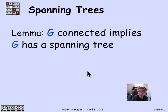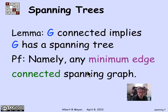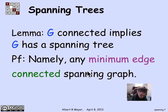Every connected graph is going to have a spanning tree. The reason is you just pick a minimal edge connected spanning subgraph. G itself, if it's connected, is by definition a spanning graph of itself because it has all its own vertices. By the well-ordering principle, there's going to be a connected spanning subgraph with a minimum number of edges, and that one, given that it has a minimum number of edges, is guaranteed to be a spanning tree.